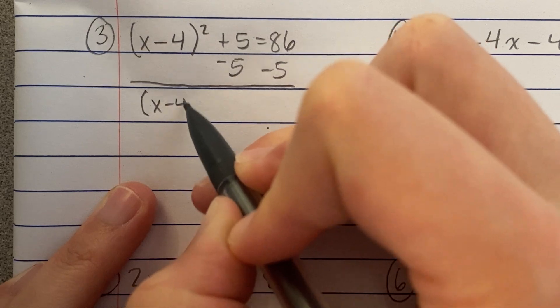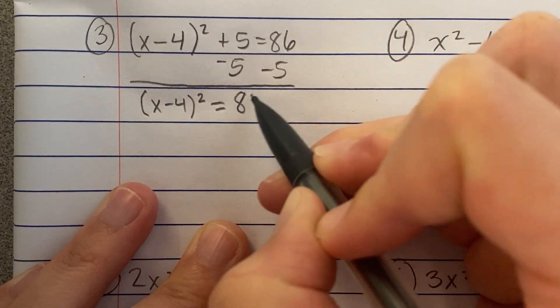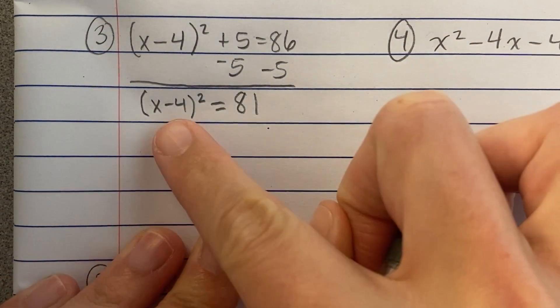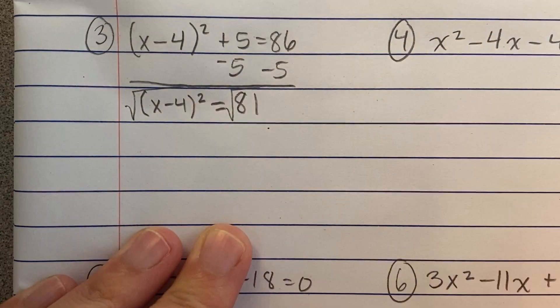That's going to get me x minus 4 squared equals 81. And then I can say, oh, you know what? I have something squared here. Let's go ahead and square root it, and square root it.